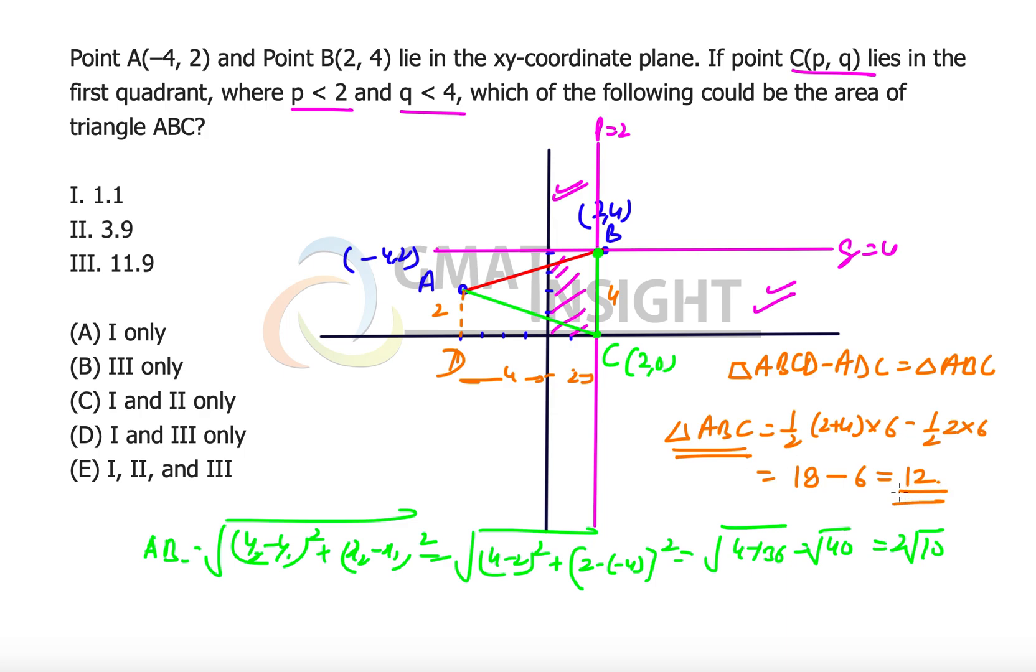So any area which is greater than 0 and less than or equal to 12 is a possible area. All three values satisfy the condition. So the answer of the question must be option E. I hope you enjoyed the explanation. Thank you so much.